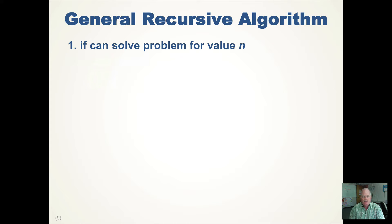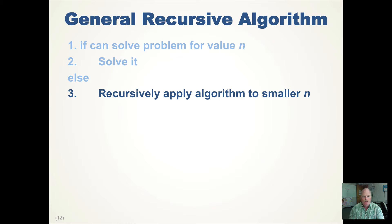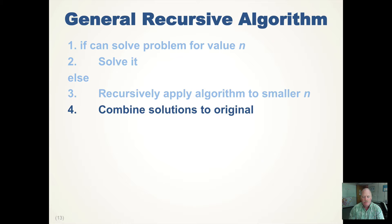The general algorithm for doing recursion is: if you can solve the problem for some value of n, perhaps a size or something, you solve it and you're done. If you can't solve it for a value of n, you try the same algorithm on a smaller size problem, a smaller n. And then once you've solved the smallest one, you combine the solutions to all those smaller problems together to solve the large problem.